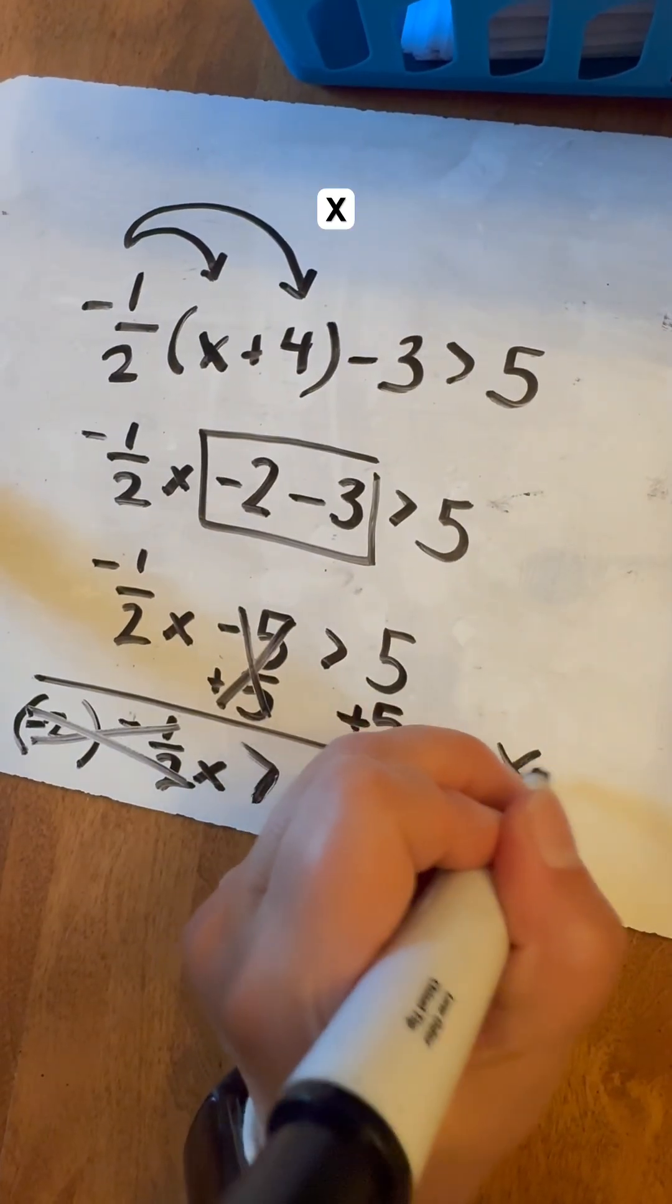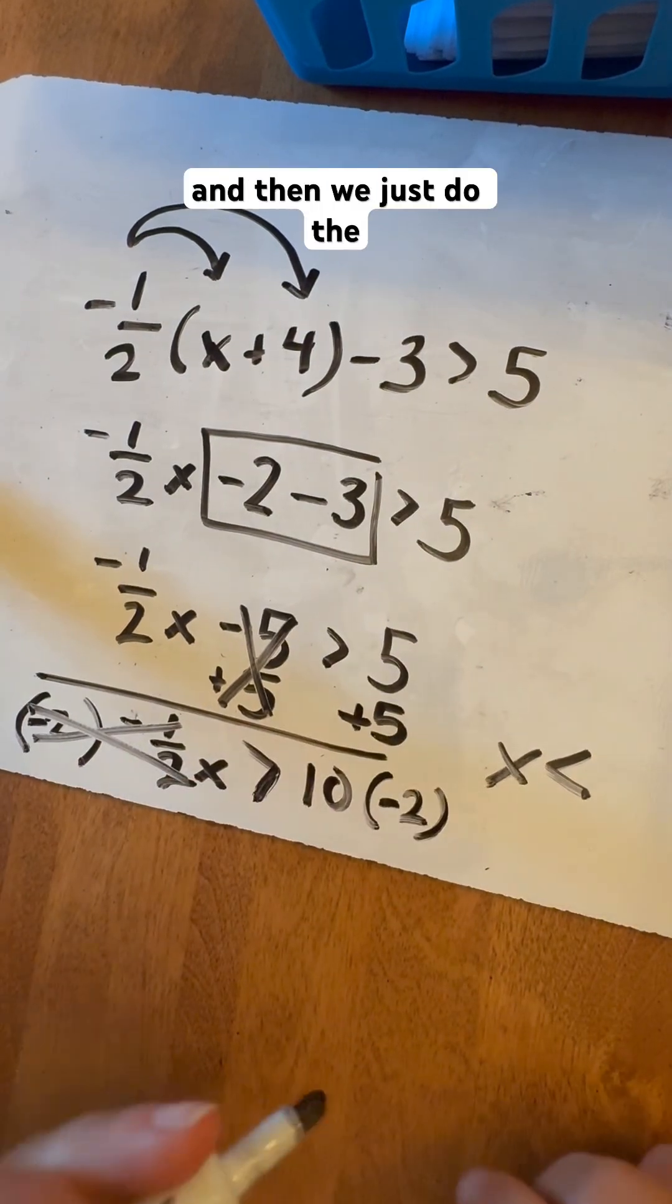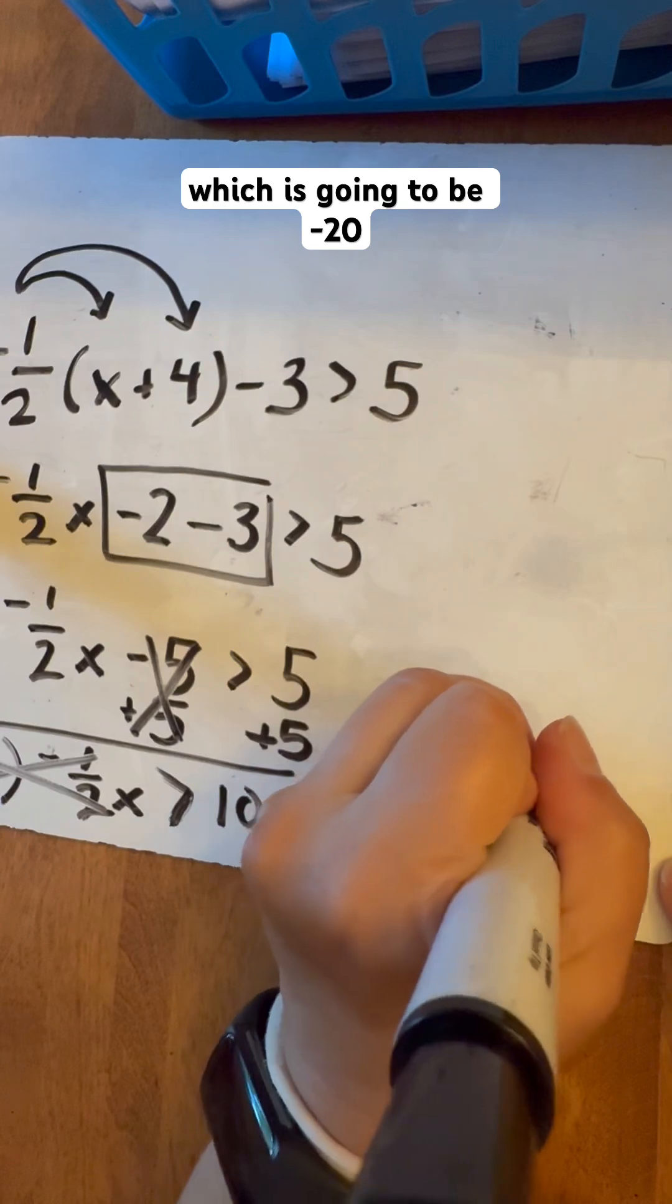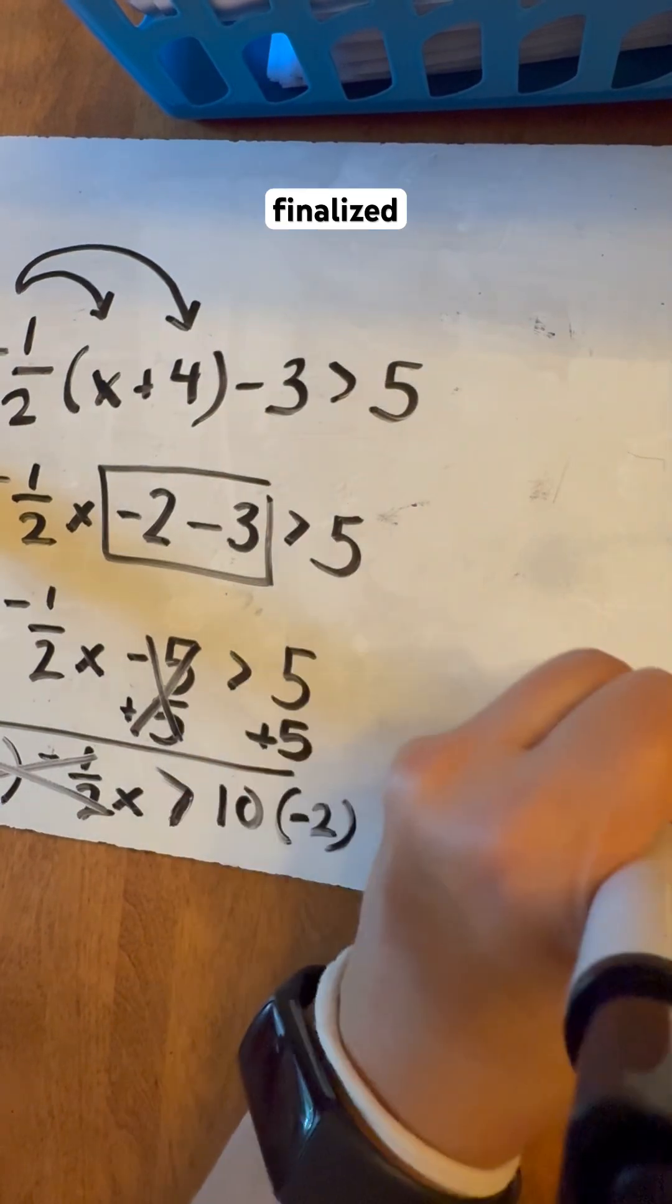So now you're going to have x and now it's going to be less than, and then we just do the ten times negative two, which is going to be negative twenty. And so that would be your finalized answer.